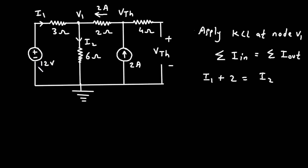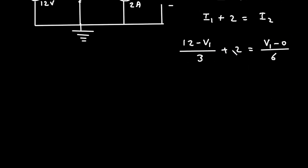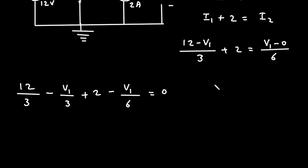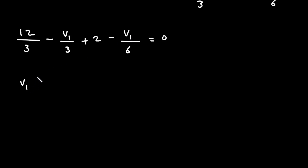According to Kirchhoff's current law, summation of all currents entering a node equals summation of all currents leaving the node. At this node the entering current is I1, and this 2 ampere is also entering. So I1 plus 2 is equal to leaving current I2. We can write I1 as (12 minus V1) divided by 3, then plus 2 is equal to I2, which is V1 minus 0 divided by 6. Now we can find the value of V1 by simplifying: 12/3 minus V1/3 plus 2 minus V1/6 is equal to 0.